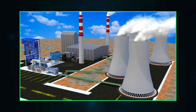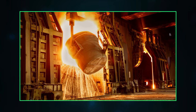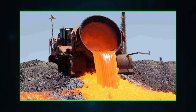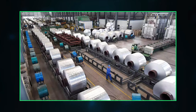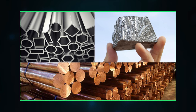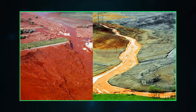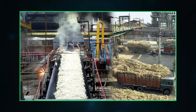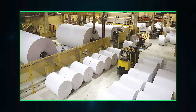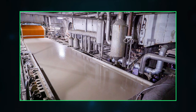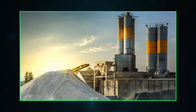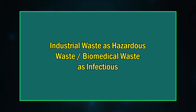The major generators of industrial solid waste are thermal power plants producing coal ash, integrated iron and steel mills producing blast furnace slag and steel melting slag, non-ferrous industries like aluminum, zinc, and copper producing red mud and tailings, and sugar industries generating press mud, pulp and paper industries producing lime, and fertilizer and allied industries producing gypsum.